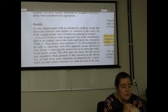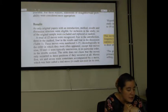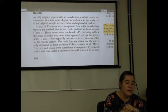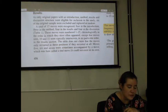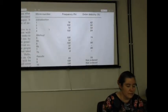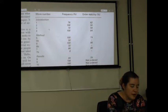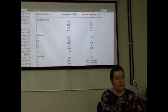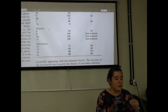As only original papers with an introduction, method, results, and discussion structure were eligible for inclusion in the study, six of the original sample were excluded and replaced at random. A total of 15 moves were recognized: four in the introduction, three in the method, four in the results, and four in the discussion. We are going to skip this table analysis and continue with the text because just in the text the author says which were the main moves.